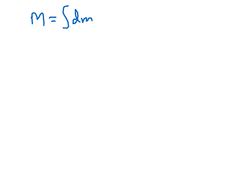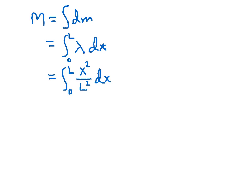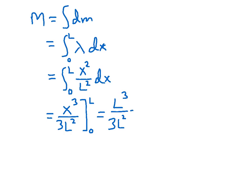Now let's do the other integral: total mass equals the integral of dm. We know dm equals lambda dx, so this is the integral from 0 to L of x squared over L squared dx. That gives x cubed over 3L squared, evaluated from 0 to L, which equals L cubed over 3L squared, or just L over 3.